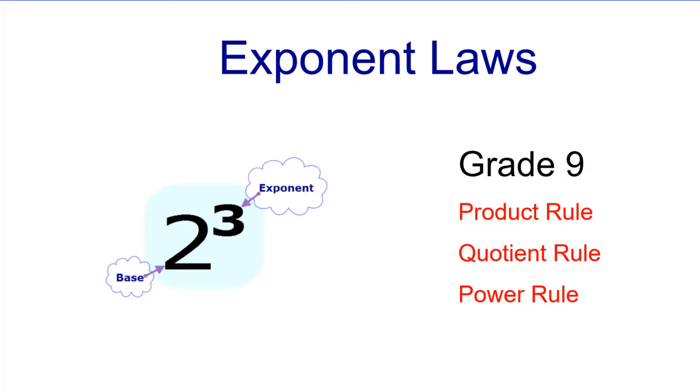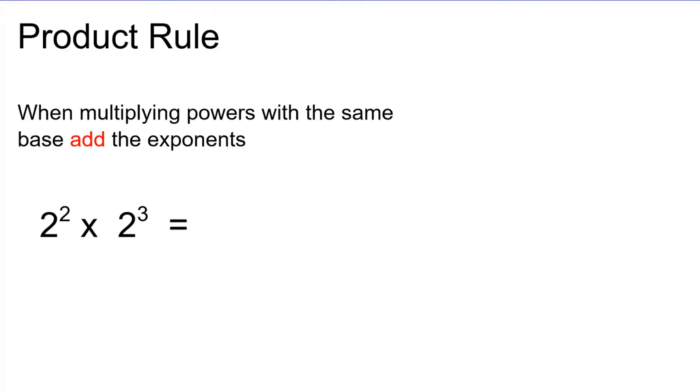So the first one we're going to look at today is the product rule. The product rule is when we multiply powers with the same base - the base is the very large two in both of these expressions - we're going to add the exponents together. So it's very important that the base is the same using all of these rules or else these rules will not work. Make sure that the very large base number that isn't the exponent is always the same.